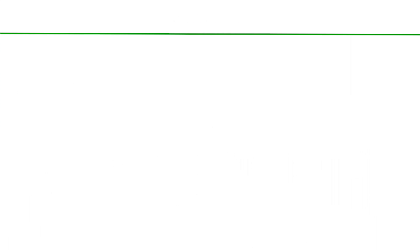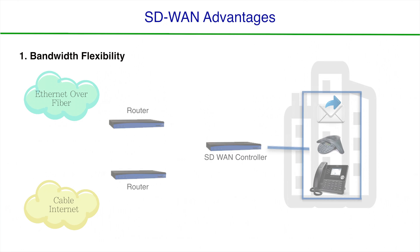Number one, bandwidth flexibility. SD-WAN allows network administrators the ability to use any bandwidth service as a platform for delivering specific VPN-related information.